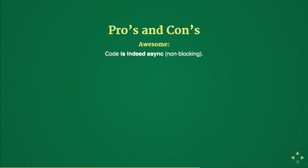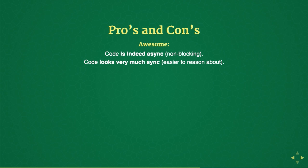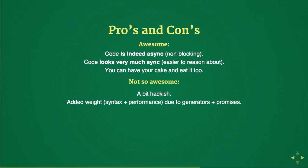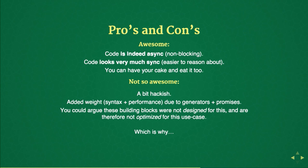Pros and cons of generators + promises: the code is indeed async and non-blocking, but it looks very synchronous — regular control loops, regular try-catch — much easier for developers to reason about. You can have your cake and eat it too. But it is a bit hackish — it's not what generators were designed for, as the C# guys will tell you. There's some added weight: a wrapper, the function* syntax, yield, and a performance penalty — though most of the time you don't really care. The features are not really optimized for this pattern, which is why ES2016 provides a proper solution.